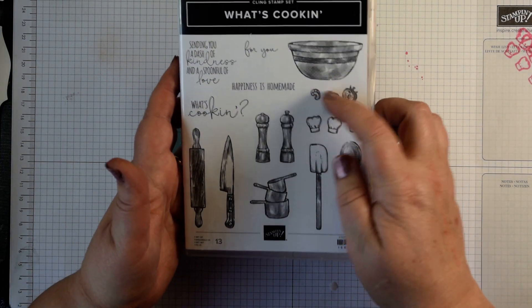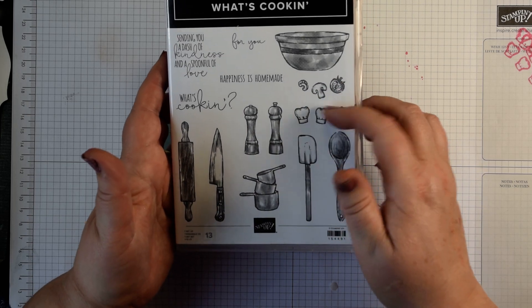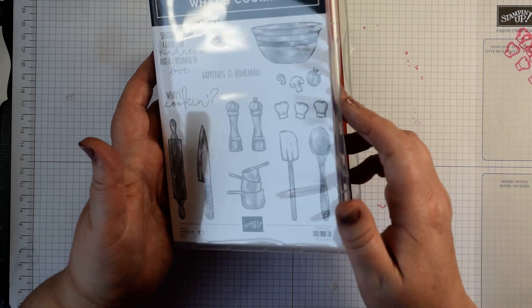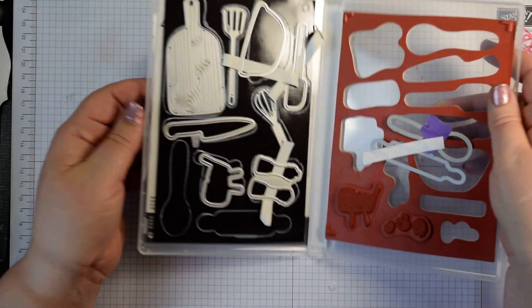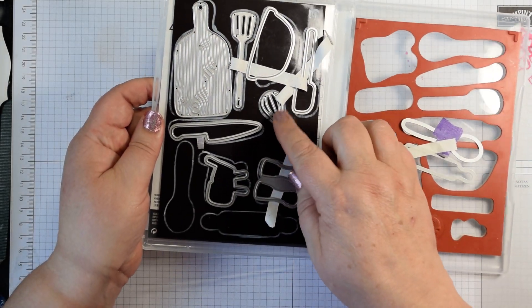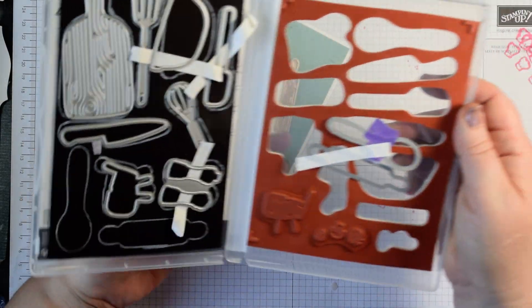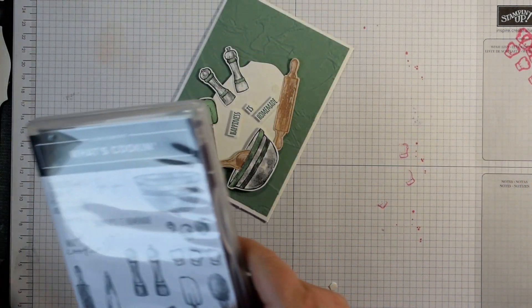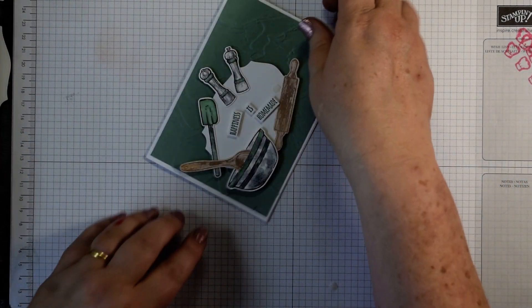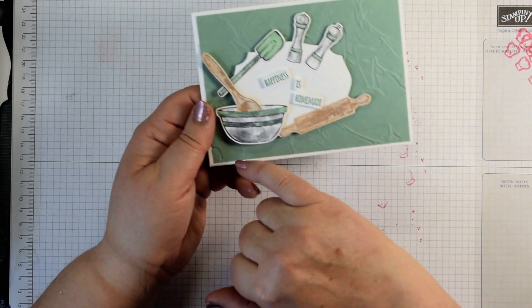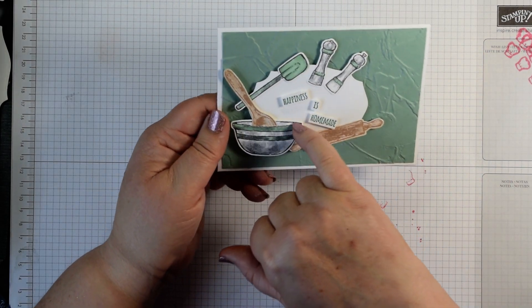In fact the only ones that it doesn't cut out are the little vegetables and the chef's hats, but everything else is cut out. You have extra dies that cut out the little whisk and spatula as well. I thought it would be a fun card to make for somebody who's keen on baking with a little spoon inside the bowl.